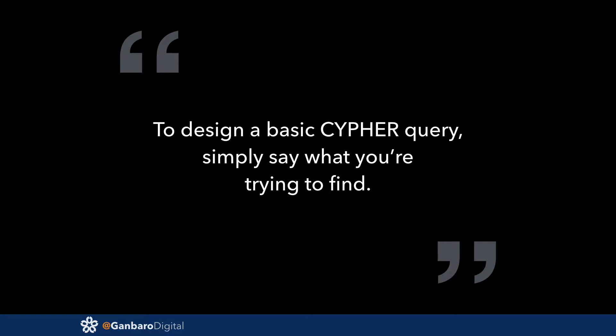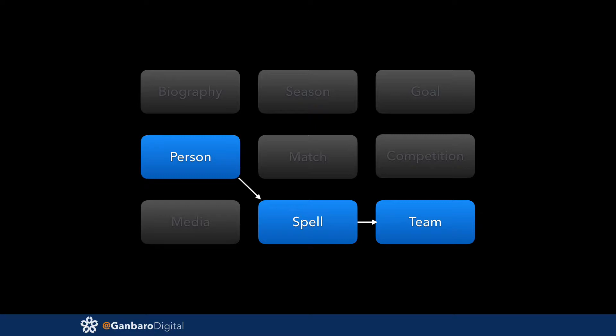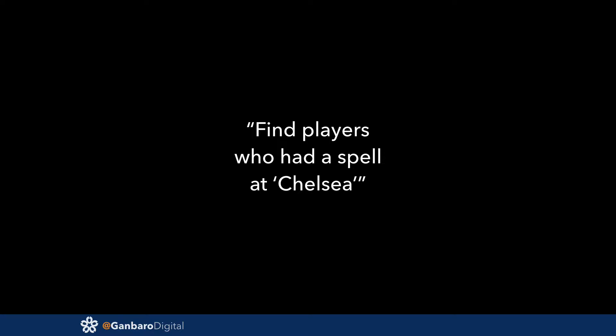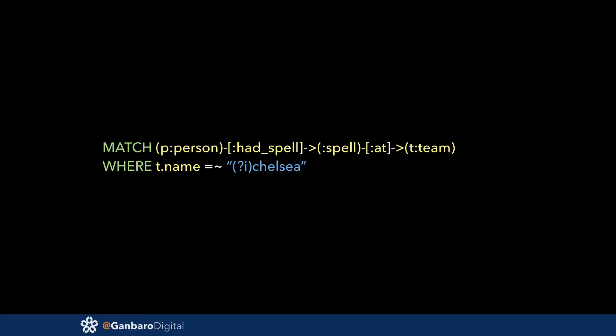The nice thing about Cypher is: if you describe the problem out loud, say what you're trying to do, that's normally the basis of your Cypher query. We talked to the data historian and he said 'find players who had a spell at Chelsea' — that's it. In Neo4j we have a pool of people which includes players and non-players, and some of those have had spells at Chelsea, and that's how you match the record. It's that straightforward.